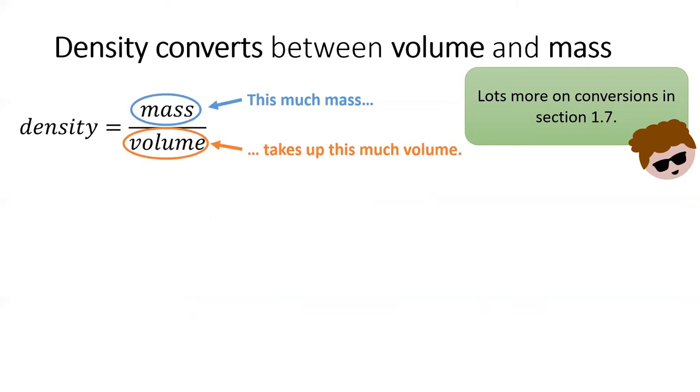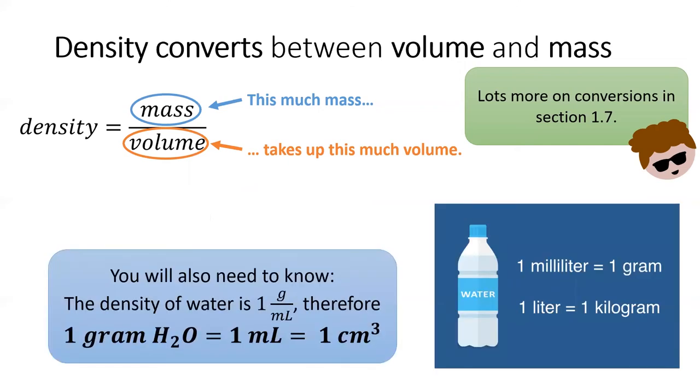Anytime we have two units expressed as a fraction we can use that fraction to interconvert between the unit on the top and the unit on the bottom. For example, one milliliter of water weighs one gram. We can use the density of water, one gram per milliliter, to convert between volume of water and its mass.